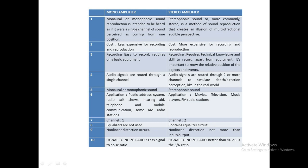Monophonic sound is supposed to come from a single channel, and it will appear to come from only one position. In the case of stereo, we will have the illusion that the sound is coming from two directions. In terms of principle of operation, in monophonic, sound appears to come from one source in one direction, whereas in stereophonic, sound appears to come from surrounding directions.